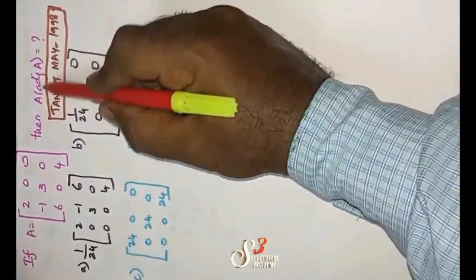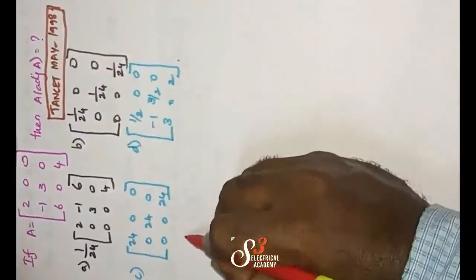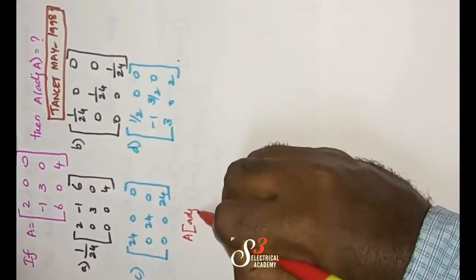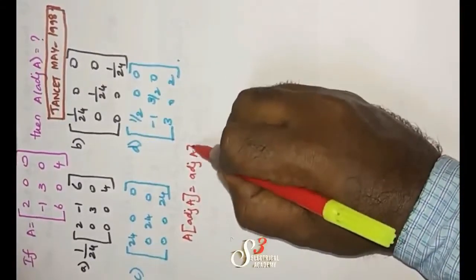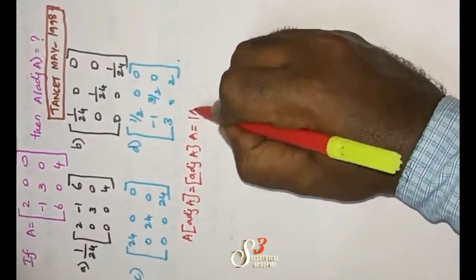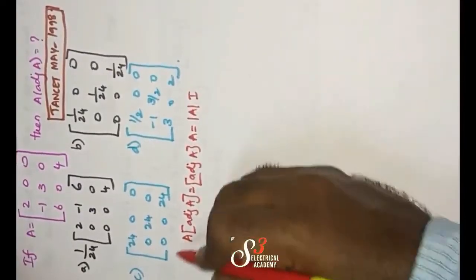Multiplication of matrix into adjoint of that matrix. That is A into adjoint of A should be equal to adjoint of A into A should be equal to determinant of A into identity matrix.